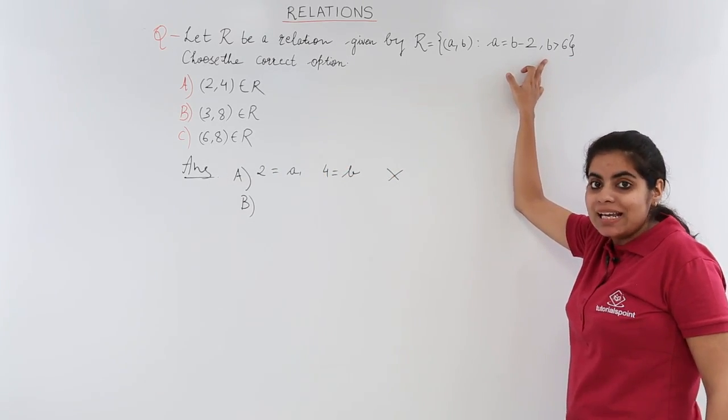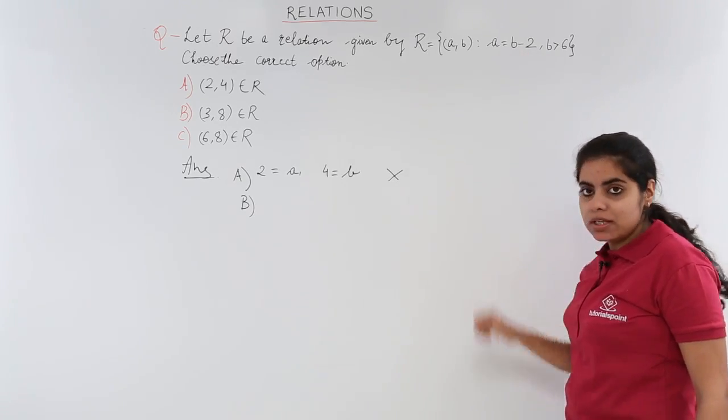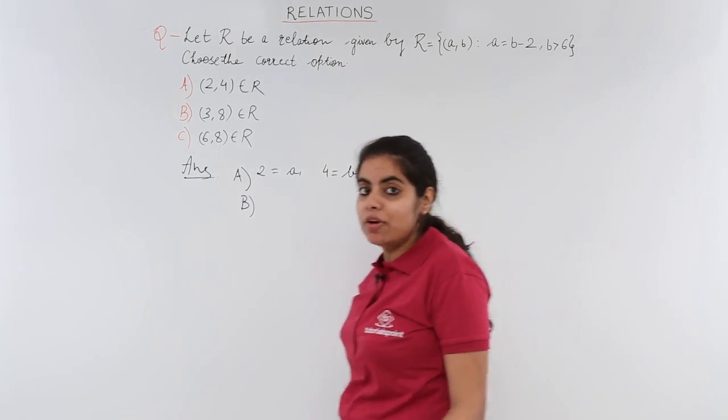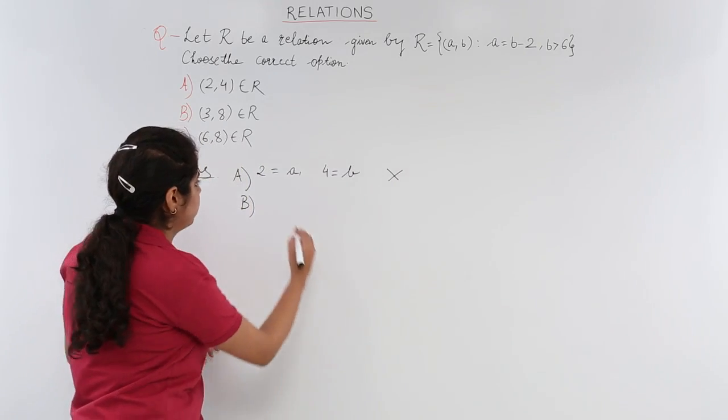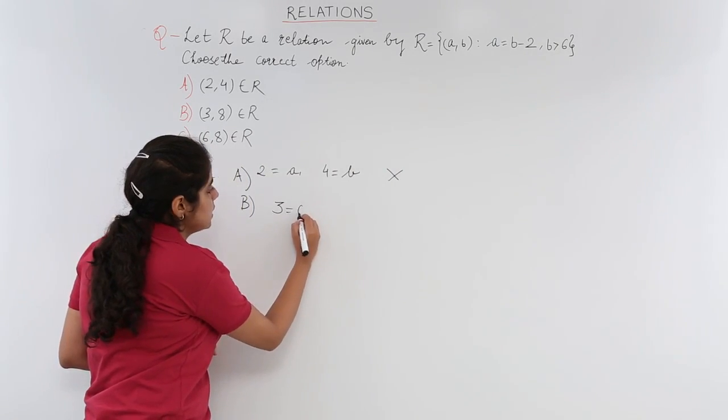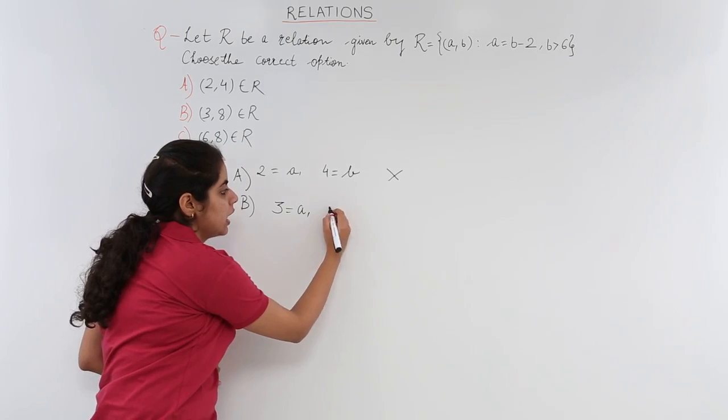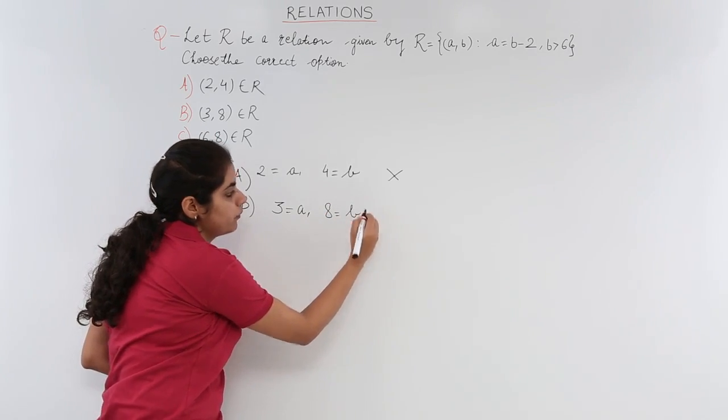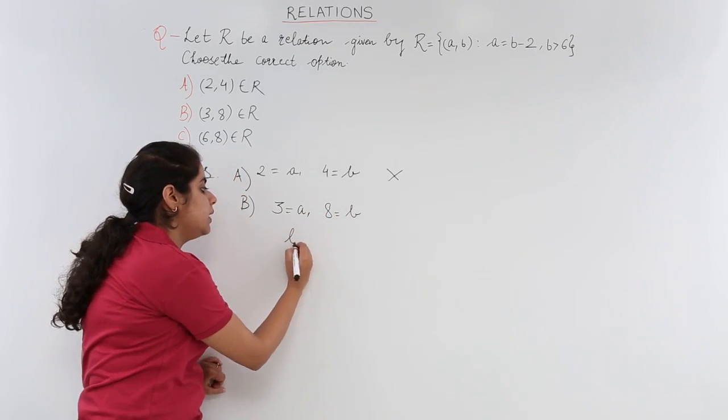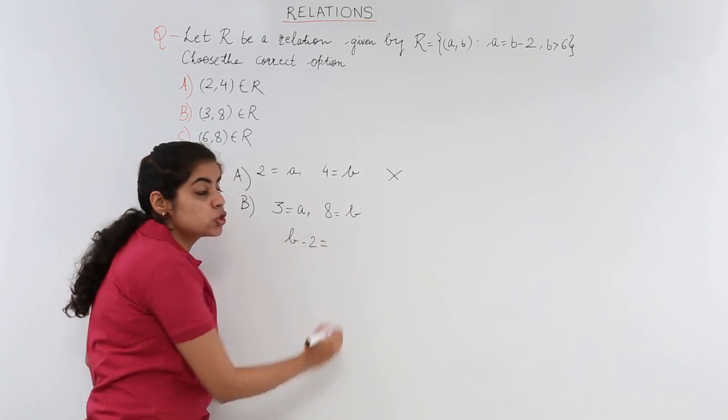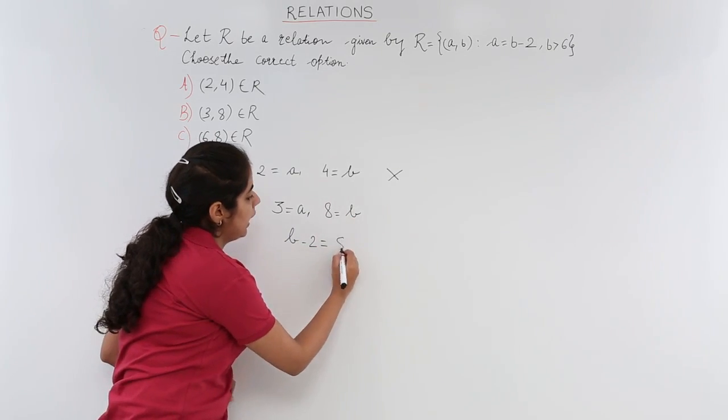Let's check this whether a is b minus 2. 3 is a and 8 is b. B minus 2 should be a.